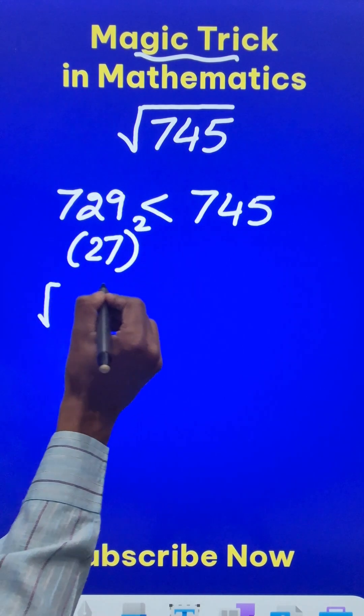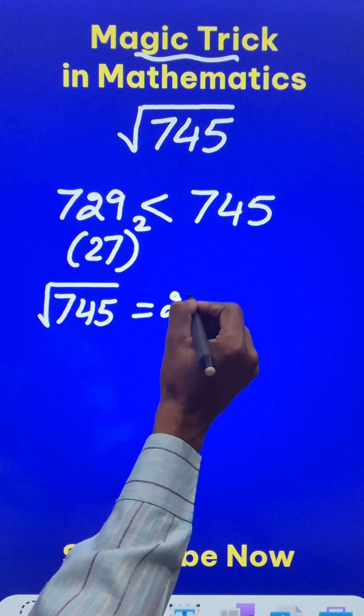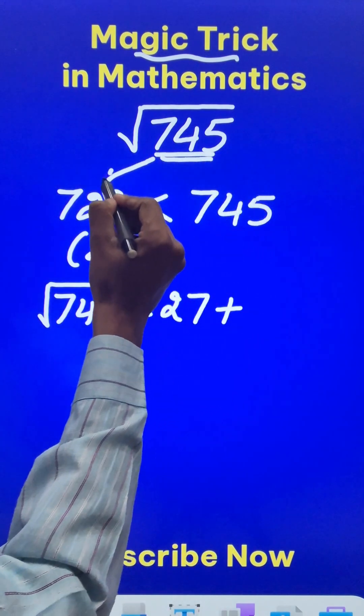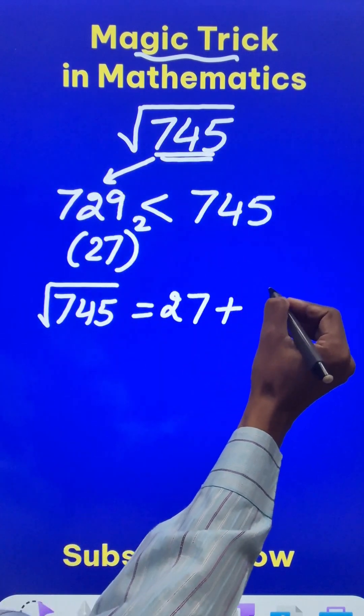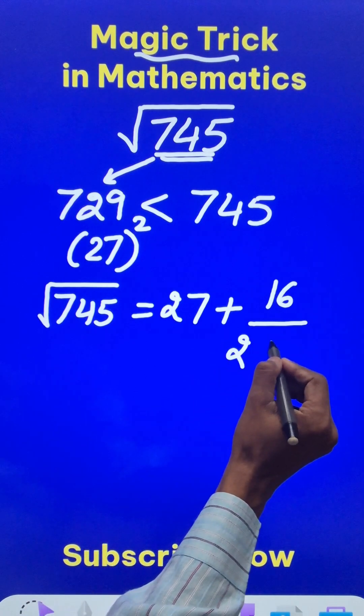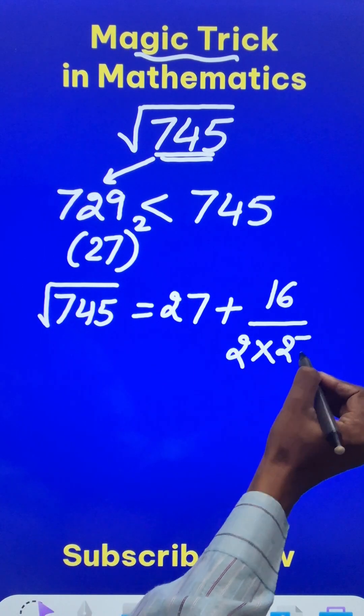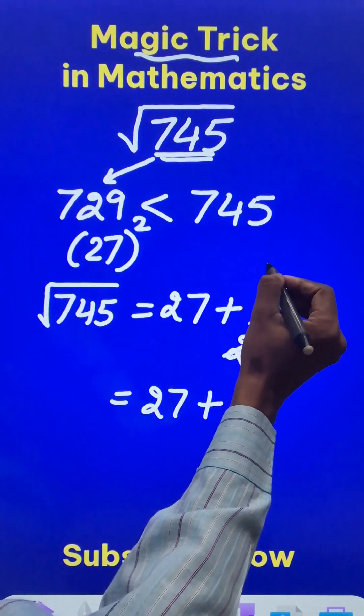So if I have to find the square root of 745, I will use this 27 first, and then plus the difference between 745 and 729, which is 16. So 16 upon 2—this is a default number we have to write—and in the denominator, 2 will be multiplied by this number 27. Now 27 plus 2 cancels 16 eight times, so this is 8 upon 27.